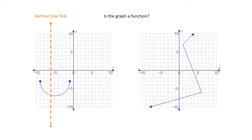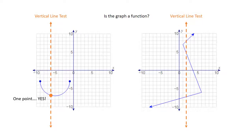What you'll do is imagine a vertical line passing through the graph, and if at any given point it only passes through once — just one point — we're going to say yes, it is a function. If a vertical line were to pass through multiple points, then we're going to say no, it is not a function. So one point passing through is yes, multiple points is no, and that is the vertical line test.